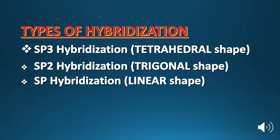Types of hybridization. First is sp3 hybridization. In case of sp3 hybridization, four electron pairs are attached around the central atom, and the molecular geometry is tetrahedral.